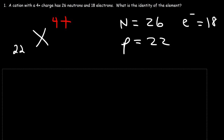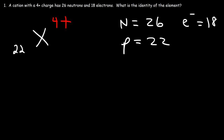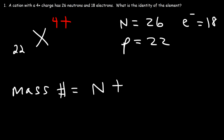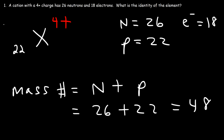If we wish to calculate the mass number, the mass number equals neutrons plus the atomic number — or neutrons plus protons, since protons equals the atomic number. So it's 26 plus 22, which is 48.